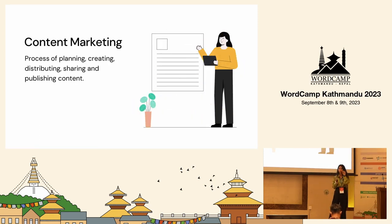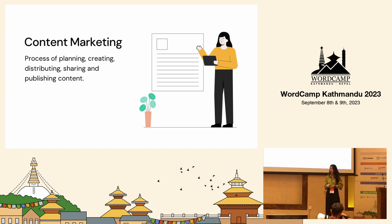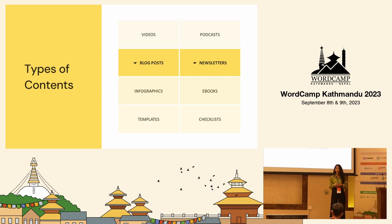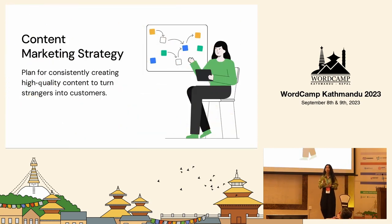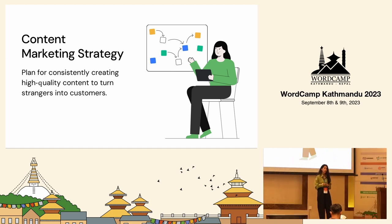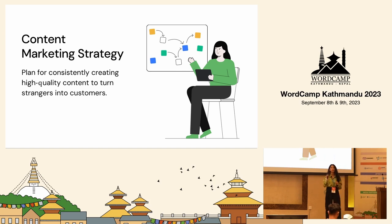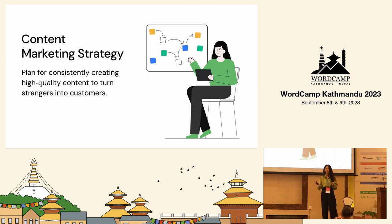For the people wondering what content marketing is — it's a process of planning, creating, distributing and sharing content. This content can be blogs, newsletters, emails, podcasts, infographics, videos and so on. How people or organizations use different strategies to produce high quality content is a content marketing strategy. It varies a lot, depending on the working style of the people or the goals set by the organization. Basically, business owners adapt such strategies to attract, engage, convert and retain their customers.